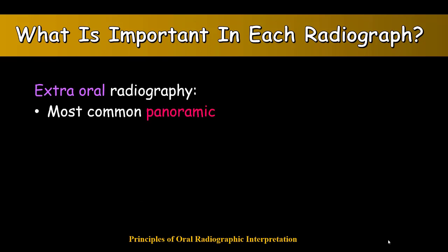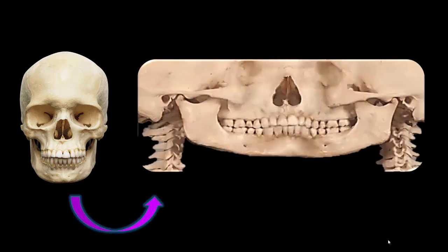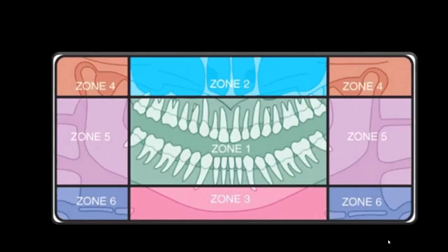What is important in the extraoral radiography? The most common extraoral radiograph is the panoramic radiograph. If I don't want to miss a part in a panoramic radiograph, I have divided it into six zones. A panoramic radiograph is like looking at a book when I'm opening it and looking towards the spine and both covers. It's the skull that I have opened and look at it from both sides.